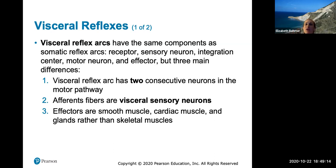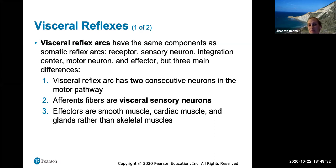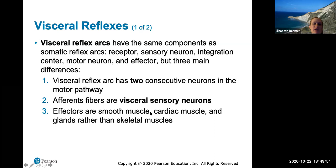The visceral reflex arc has receptors, sensory neurons, an integration center in the brain or spinal cord, a motor neuron, and an effector. Three main differences: the visceral reflex arc has two consecutive neurons in the motor pathway — the pre- and postganglionic neurons; the afferent fibers are visceral sensory neurons coming only from viscera; and the effectors, unlike skeletal muscle, produce entirely involuntary responses.